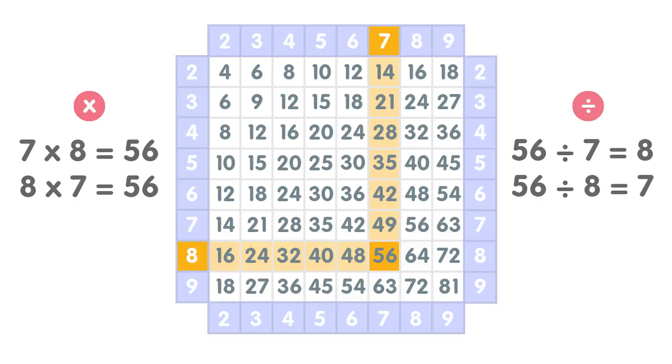56 divided by seven equals eight, and 56 divided by eight equals seven. 56 is connected to seven and eight in four ways.